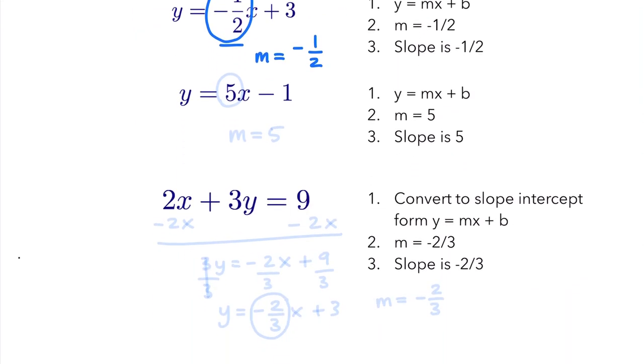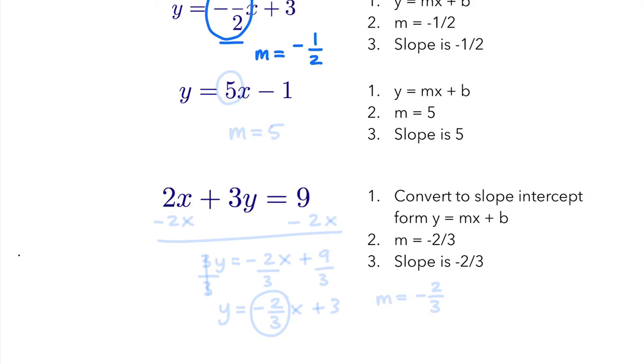So our slope is negative one-half. Now the same for this next one, y equals five x minus one. We just look at whatever number is next to the x. Slope is equal to five.